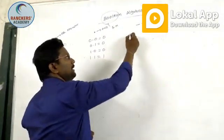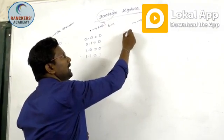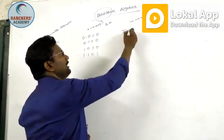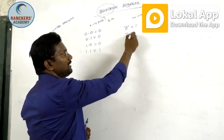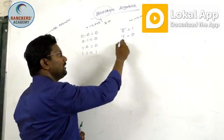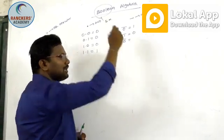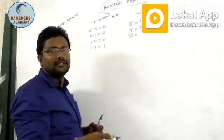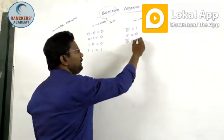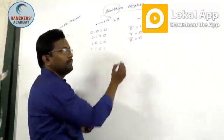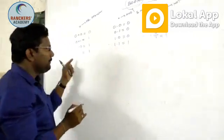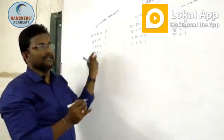Now evaluating the NOT operator (bar): zero bar is one, one bar is zero. So the basic things are: zero bar is one, one bar is zero. We derive these algebraic expressions from these basic evaluations.